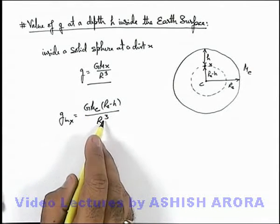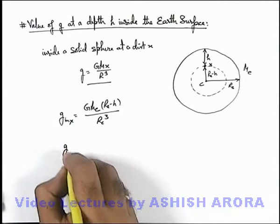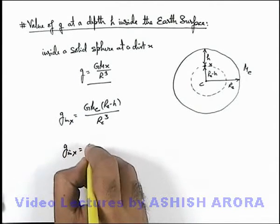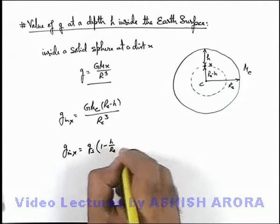And here out of this GMe by Re cube, GMe by Re square we can write as gs. So g inside x can be written as gs, and when Re is left it can be written as 1 minus h over Re.